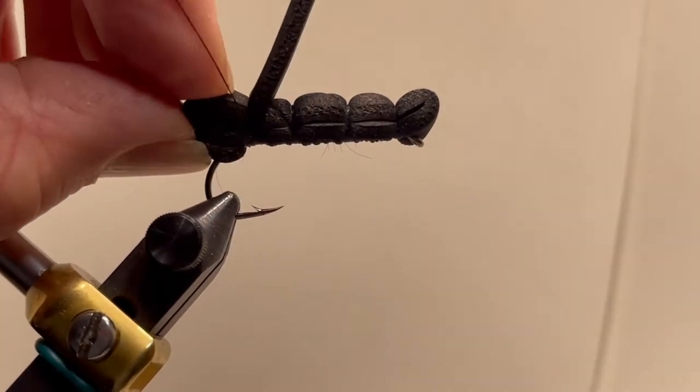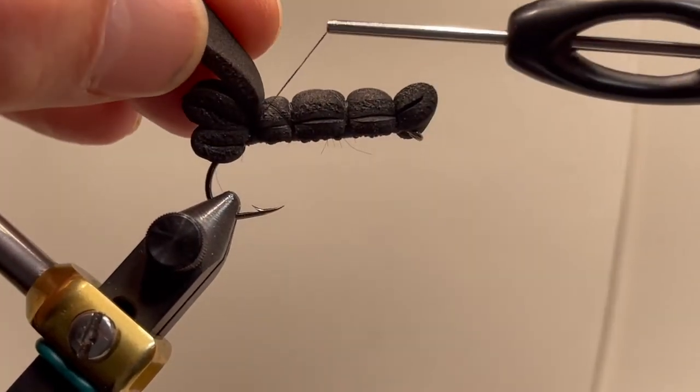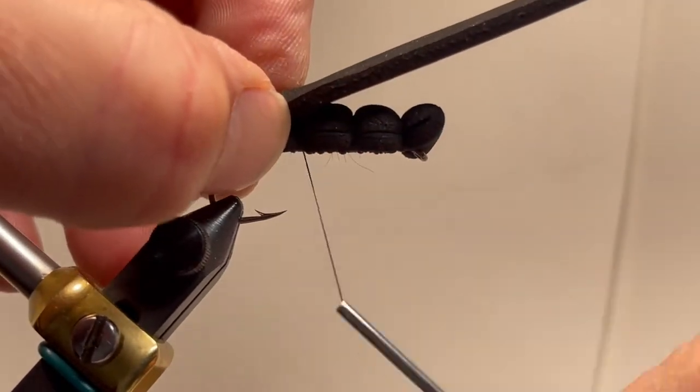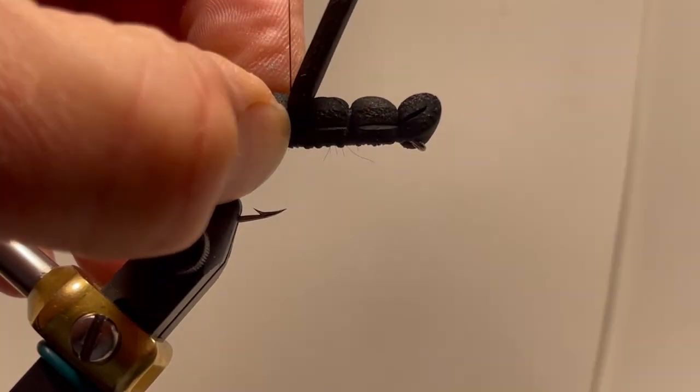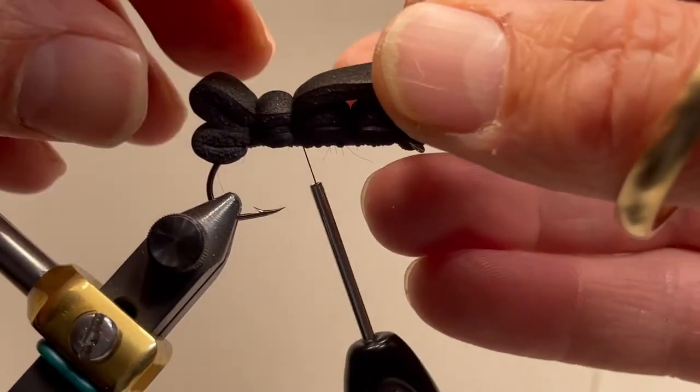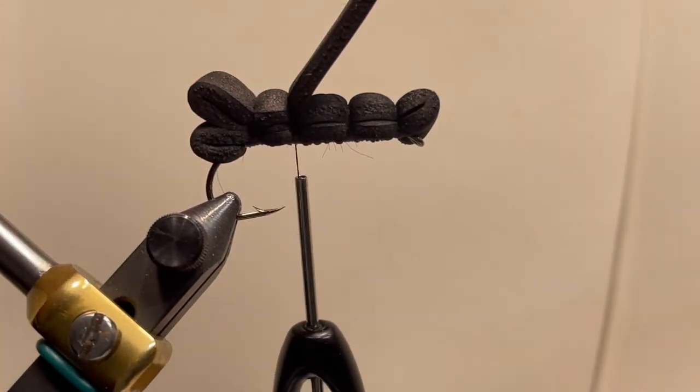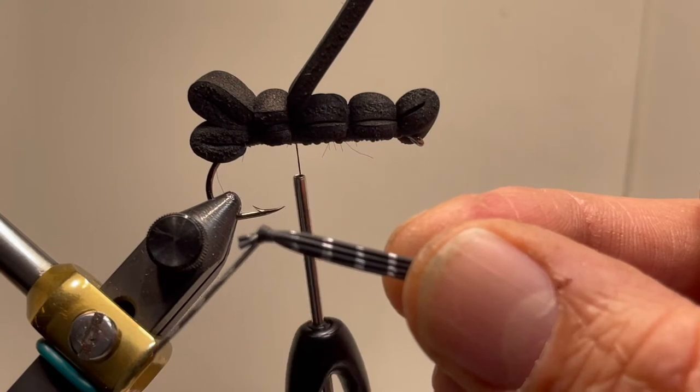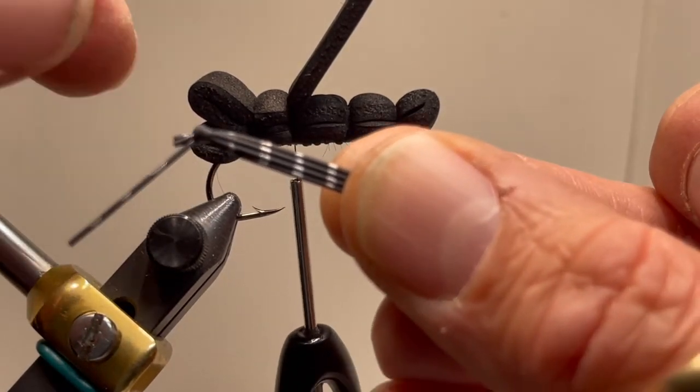Make another series of wraps right over that same front of the segmentation. Cross over that foam underneath. Pinch down this extra. And then we're going to use rubber legs. This is four strands connected, tied in a knot, and then you trim off three of the strands so you've got a small leg.